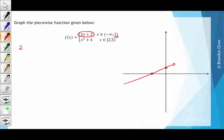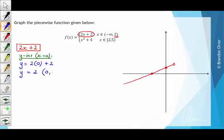So 2x plus 2, if we deal with this rule at the moment, the y-intercept is going to occur when x equals 0, so if we do that, we're going to have y is equal to 2 times 0 plus 2, and that just gives y equals 2, so our coordinate is 0, 2. So we can put that on our graph over here.